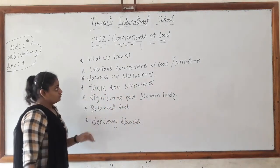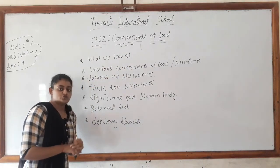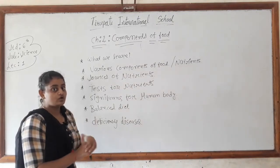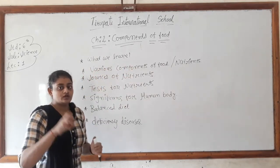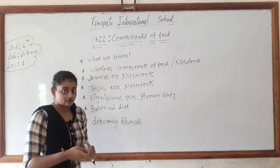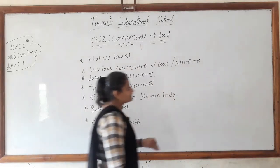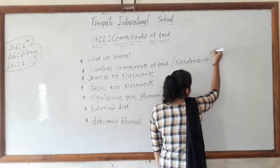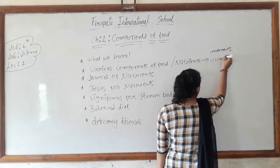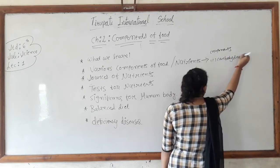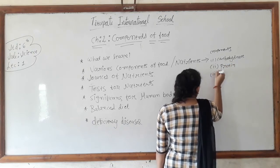We will learn about various components of food, or nutrients. As we discussed in our first chapter, food contains a lot of materials — various components. There are seven different components: the first one is carbohydrate, the second one is protein, and the third one is fat.